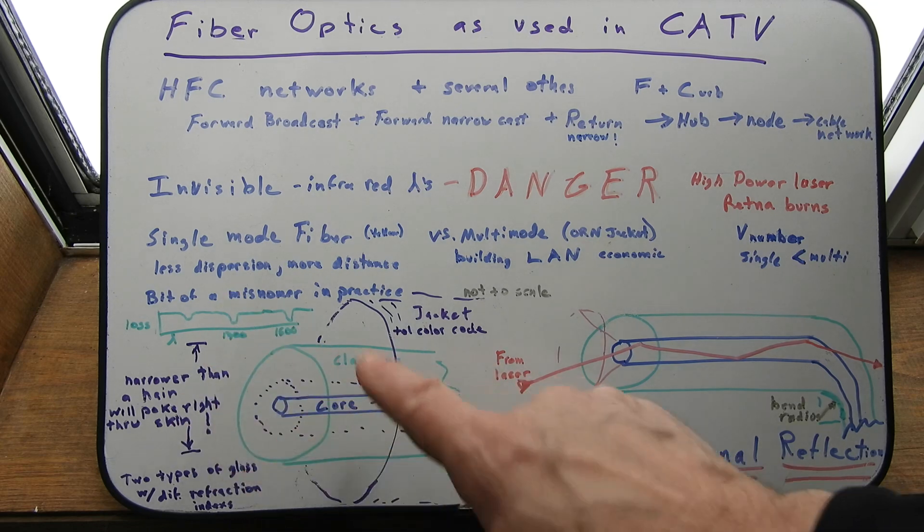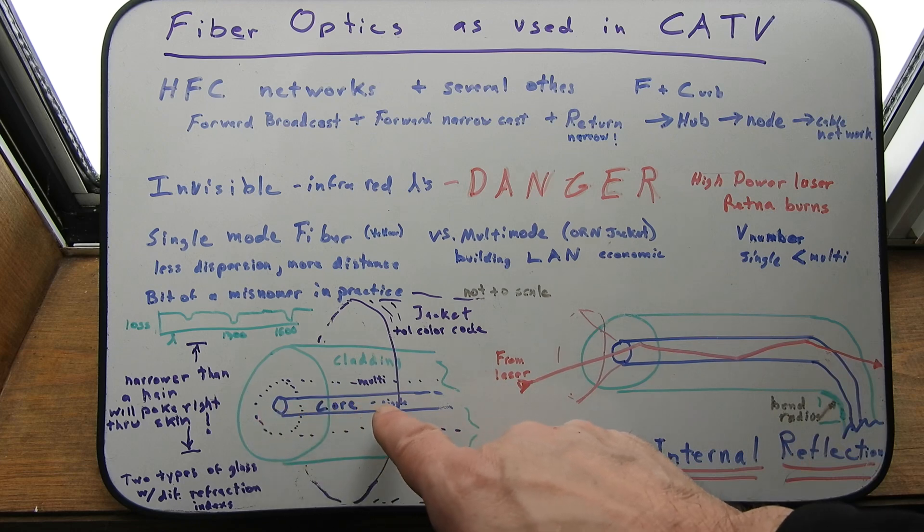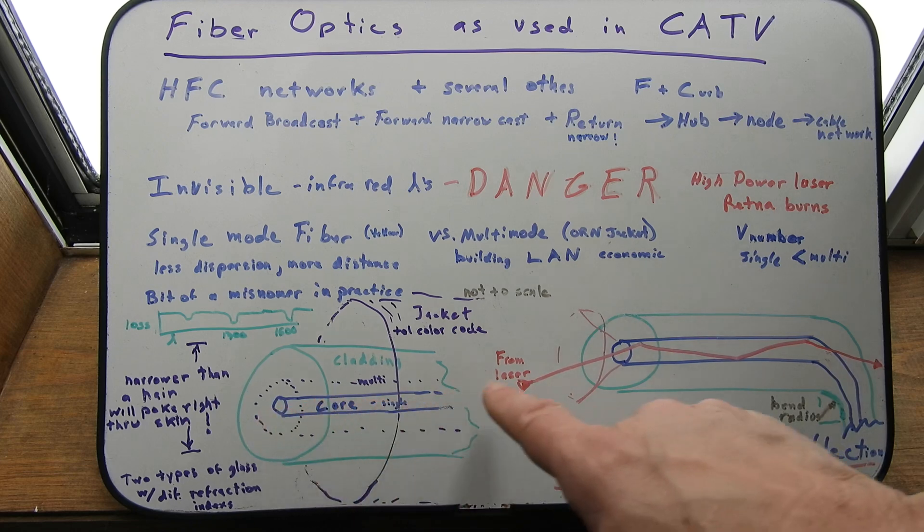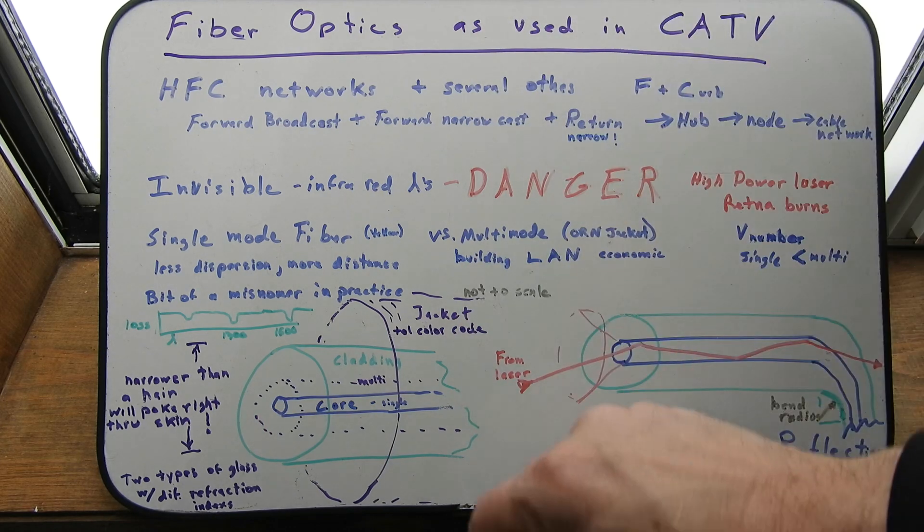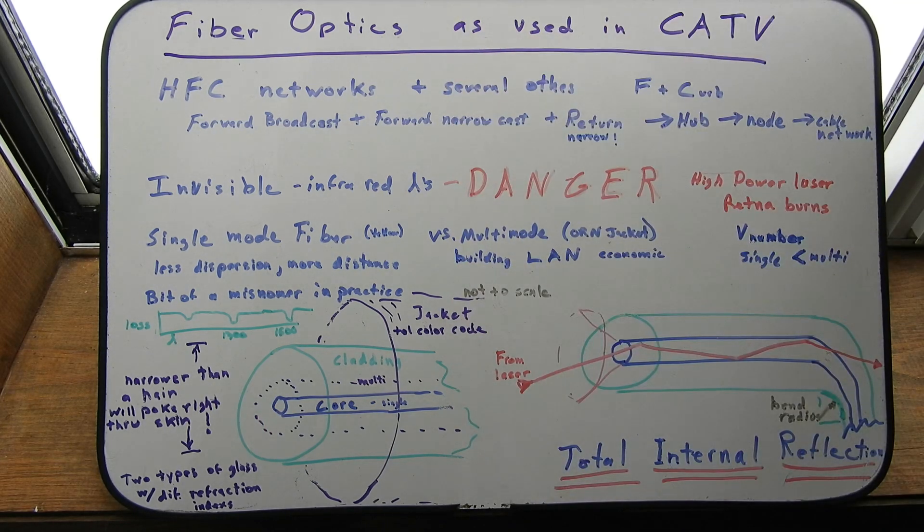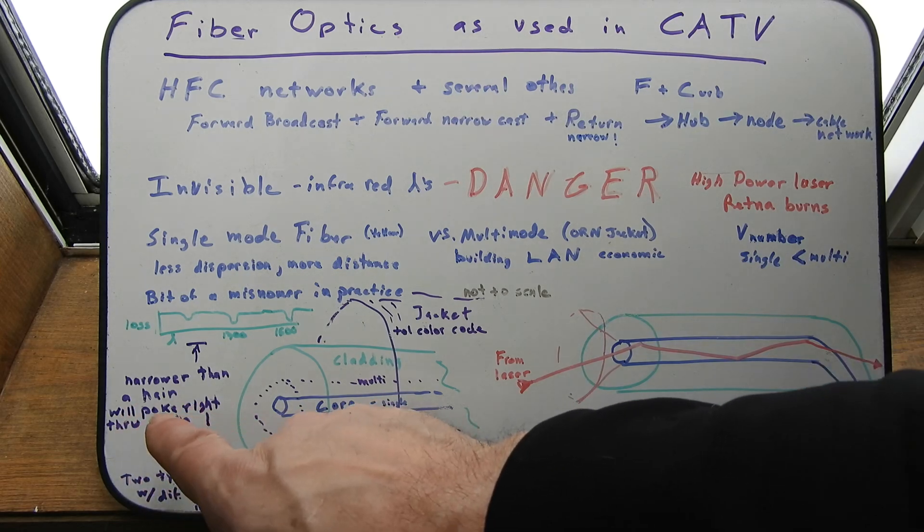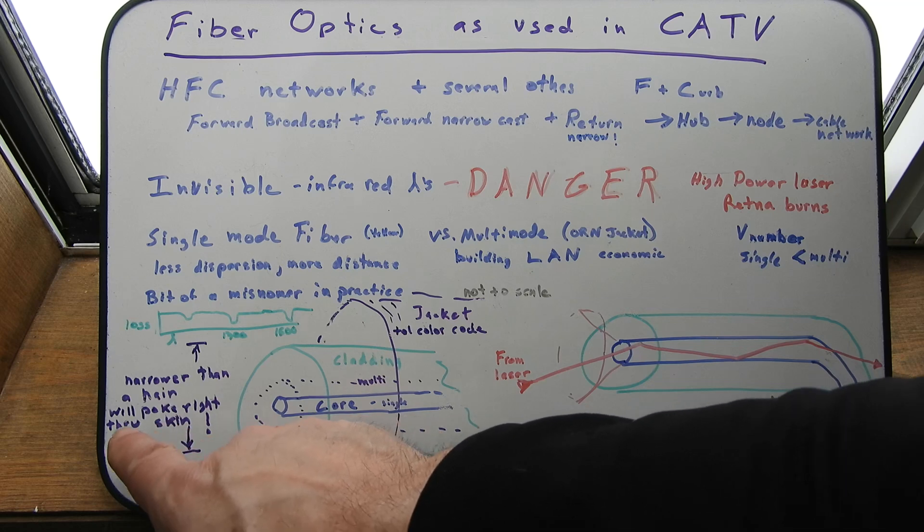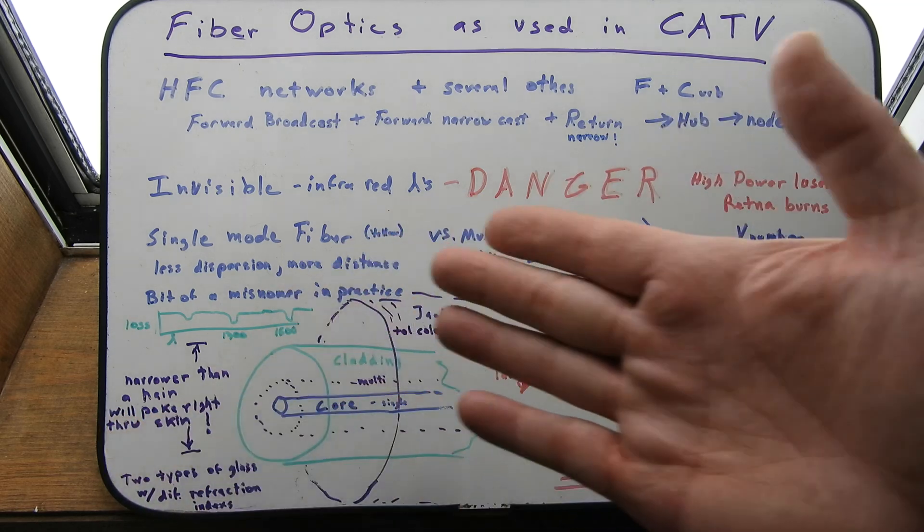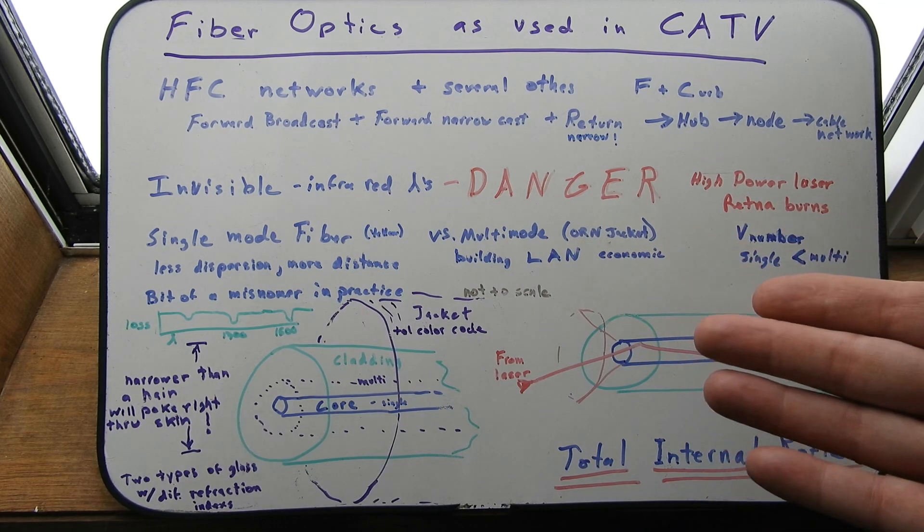So all a fiber cable is, is a very thin strand of real high purity glass. And they pull it, like fiberglass, they pull it into just a thin little strand. It's actually thinner than a hair. Like less than half of what a hair is. Of course, hairs vary and all that. It's so thin that it'll poke right through your skin.